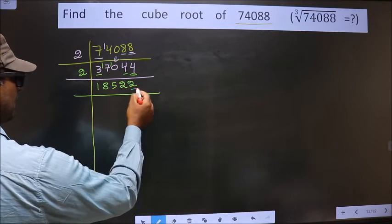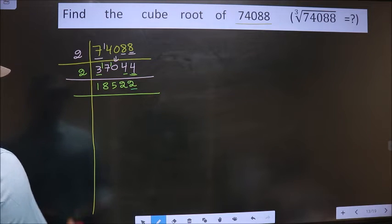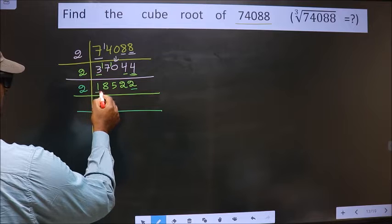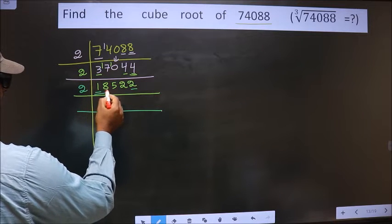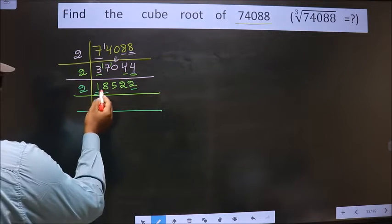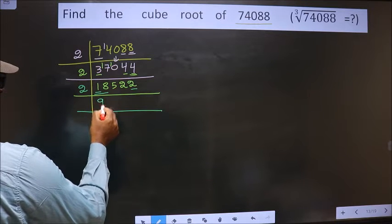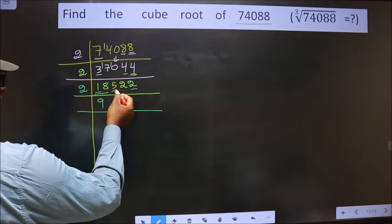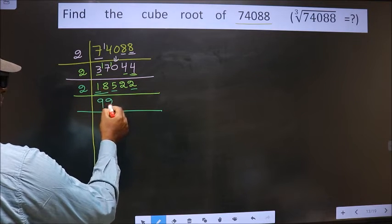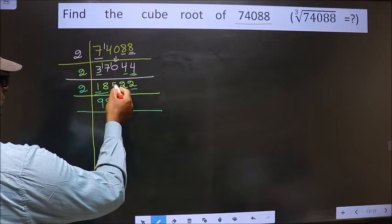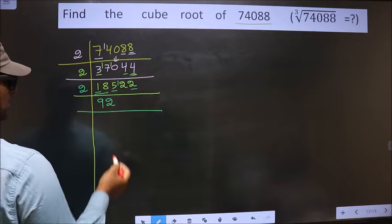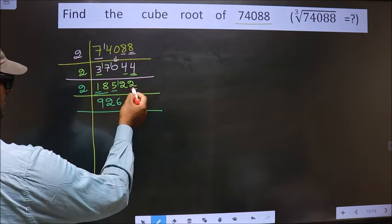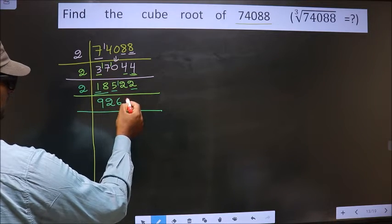The last digit is 2, which is even, so we take 2 here. The first number is 1; since 1 is smaller than 2, we take two digits making it 18. 2×9=18. Next number is 5; closest to 5 in the 2-times table is 2×2=4. 5 minus 4 is 1, carried forward making it 12. 2×6=12. Next number is 2; 2×1=2.